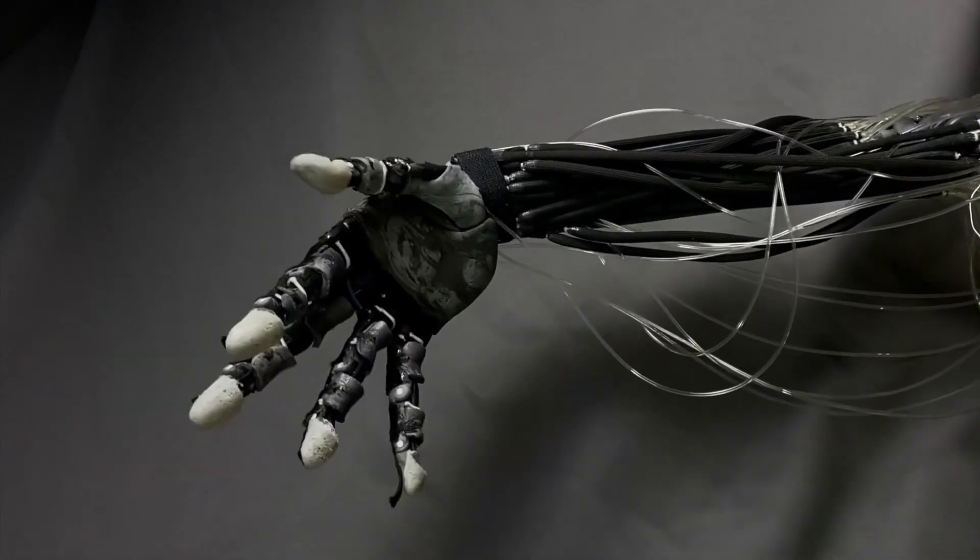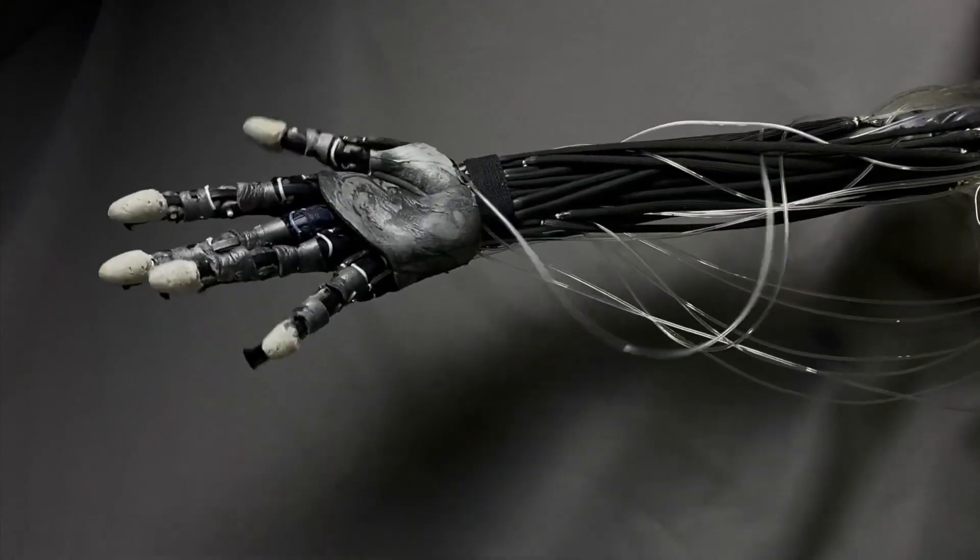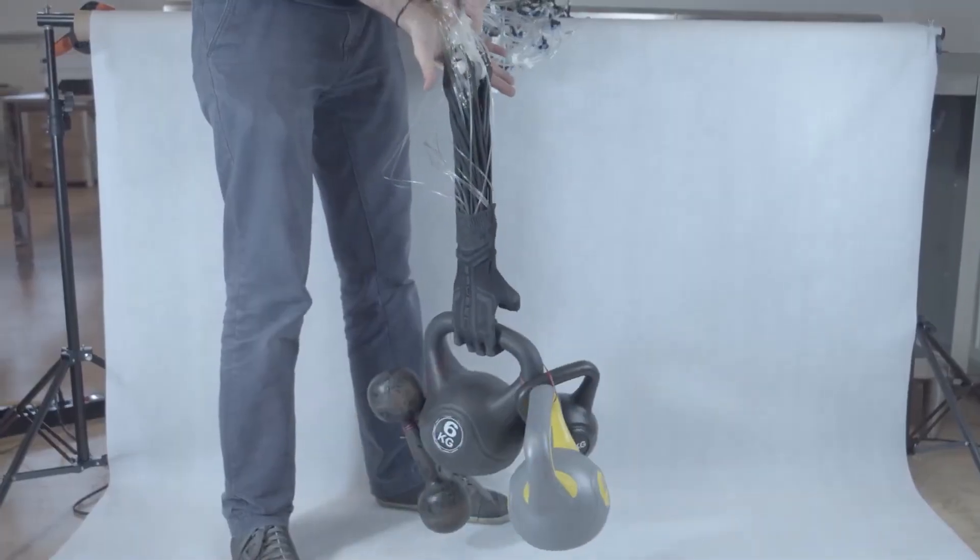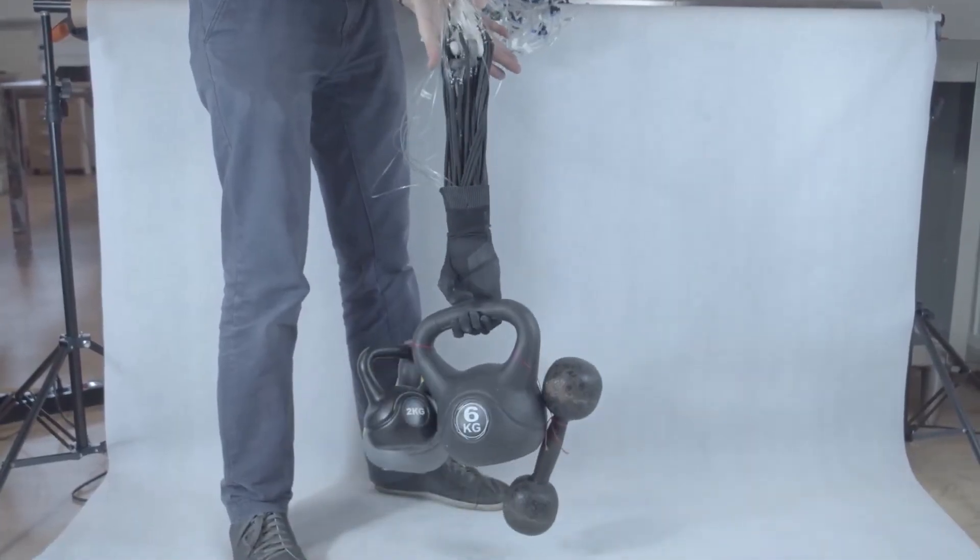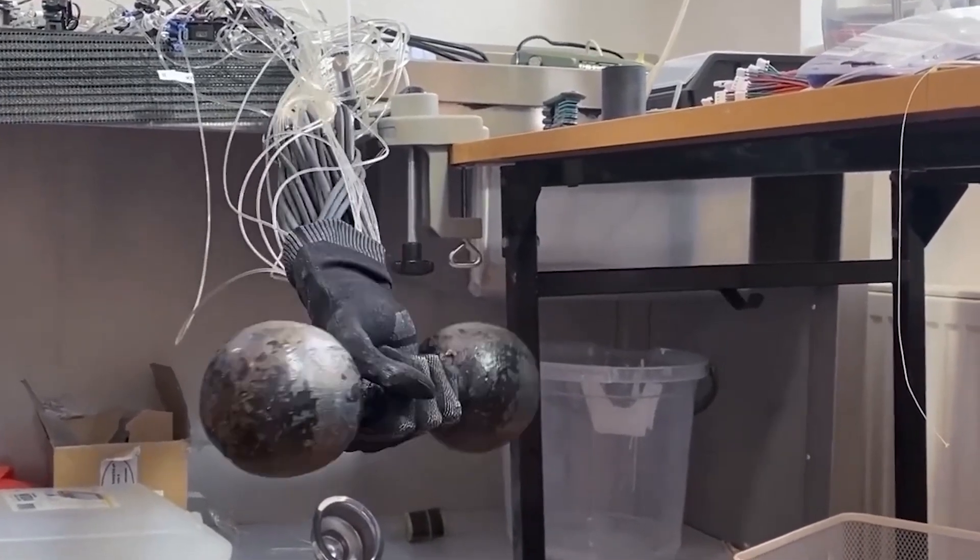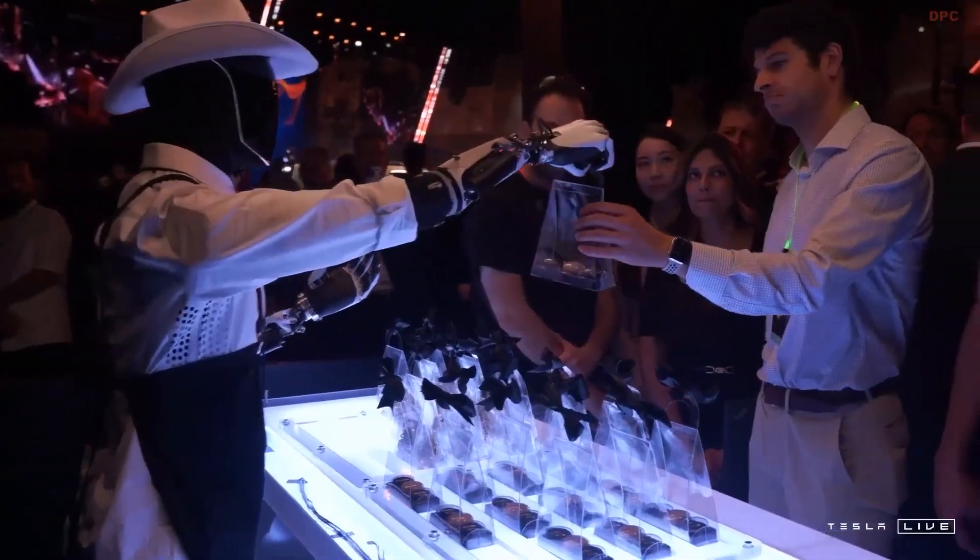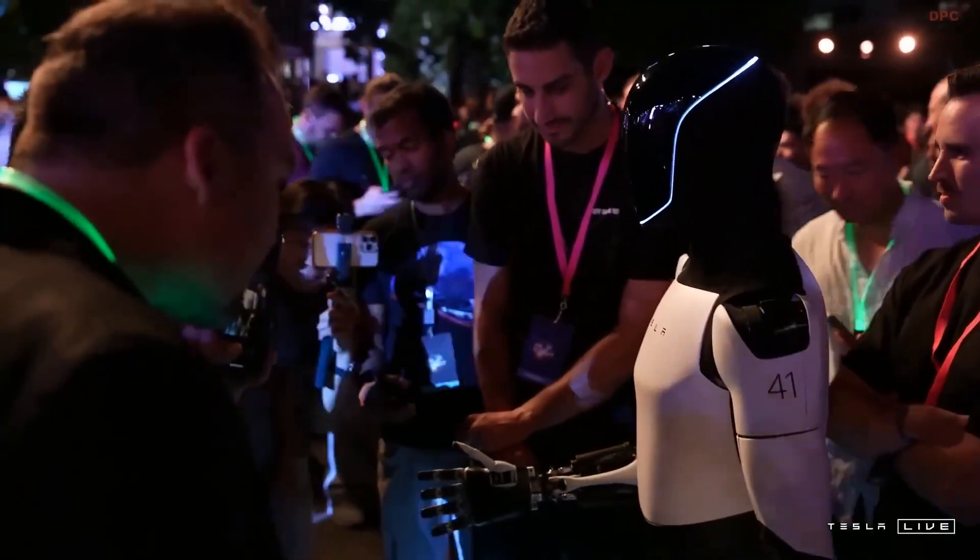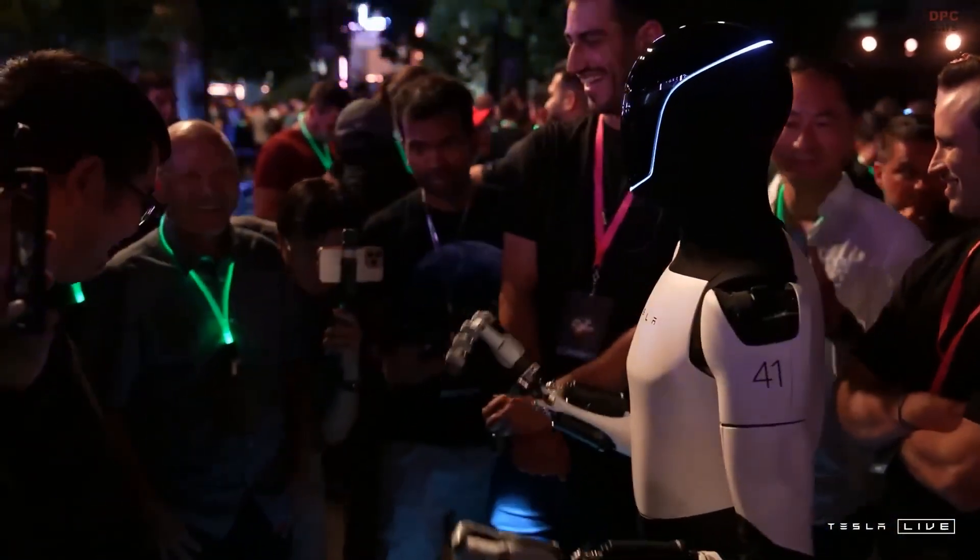ProtoClone V1 also has great potential in various industrial and production settings. Picture a humanoid robot that can tackle complex assembly tasks, maneuver through tight spaces, or even work in dangerous environments. These robots could help human workers by taking on those physically demanding or repetitive jobs that can wear us down.